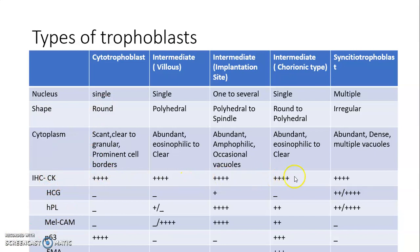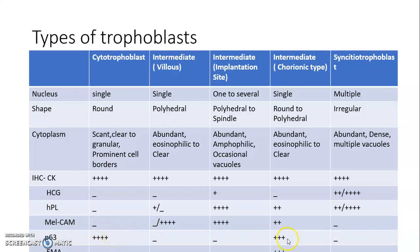Cytokeratin is positive in all trophoblastic cells. HCG is positive in syncytiotrophoblasts and also focally positive in intermediate implantation site trophoblasts. HPL is positive in implantation site intermediate trophoblasts, chorionic type, and syncytiotrophoblasts. MELCAM is positive in intermediate implantation site trophoblasts and chorionic type, and absent in cytotrophoblasts and syncytiotrophoblasts. P63 is positive in cytotrophoblasts and intermediate chorionic type trophoblasts.